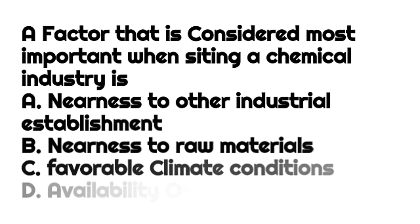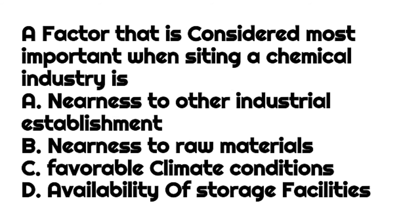A factor considered most important when siting a chemical industry is — a) nearness to other industrial establishments, b) nearness to raw materials, c) favorable climate conditions, d) availability of storage facilities. Our answer is b) nearness to raw materials.